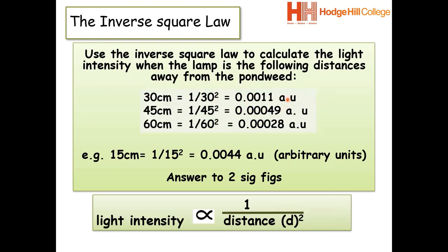OK, so this is what you should have got as your answers. Each time is really simple. All you're doing is one divided by the distance and then squaring it each time. And you should have got these answers.